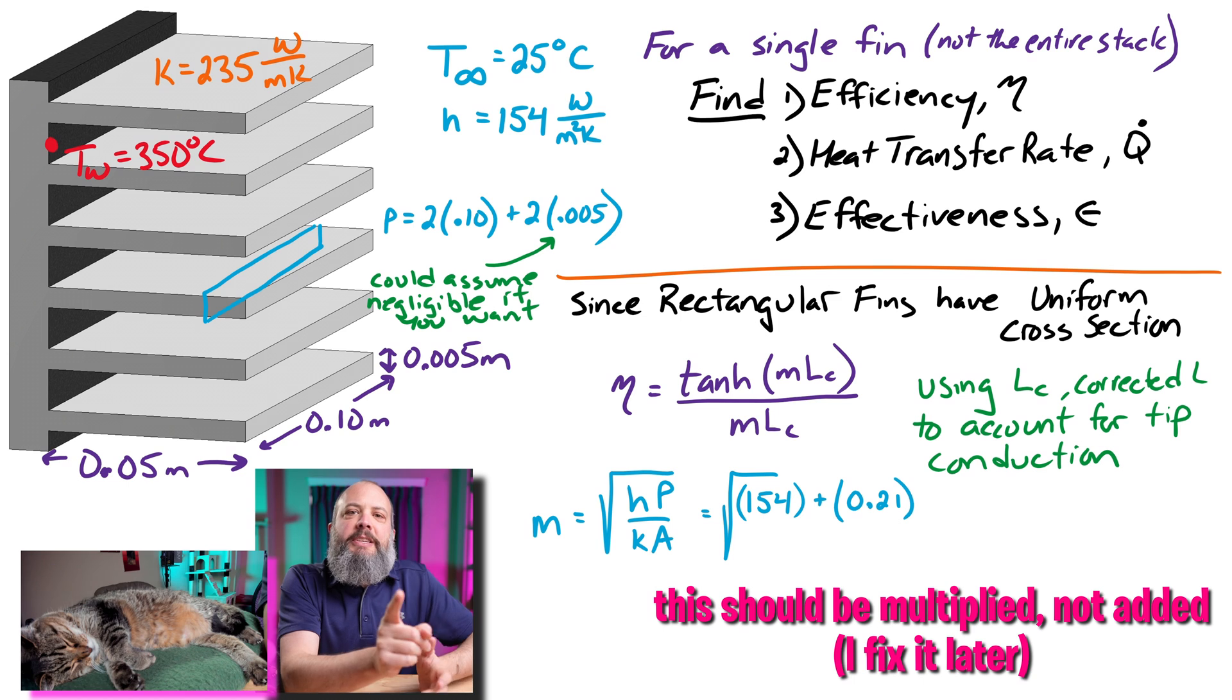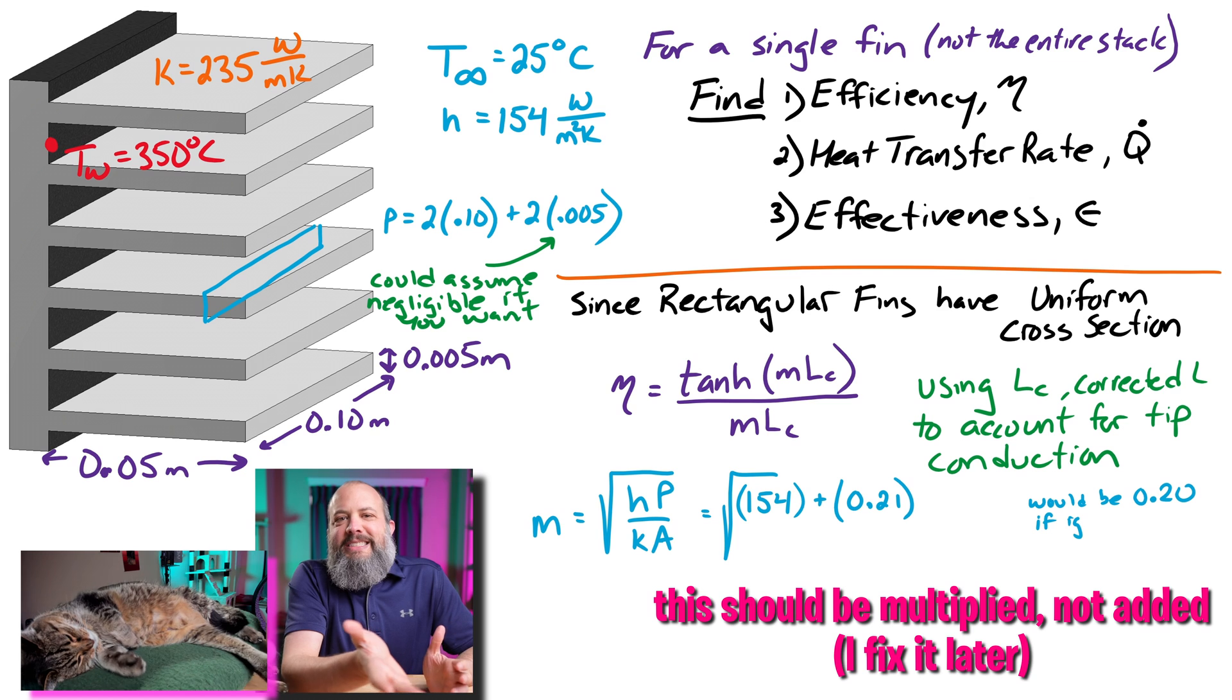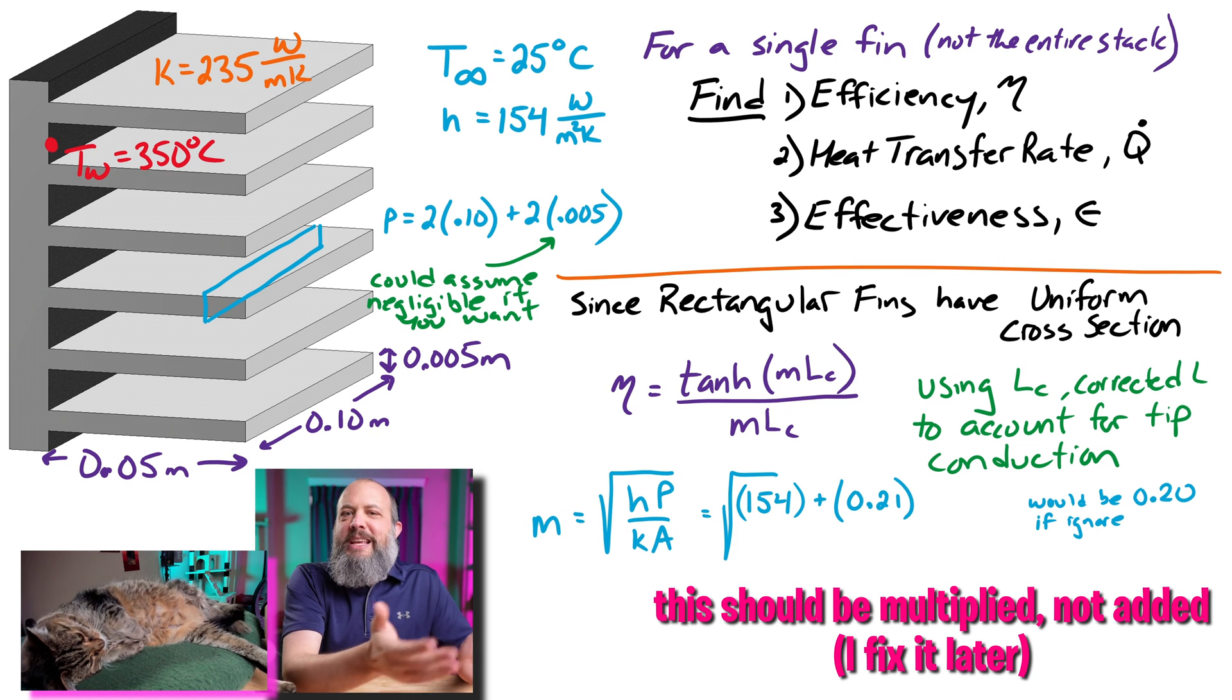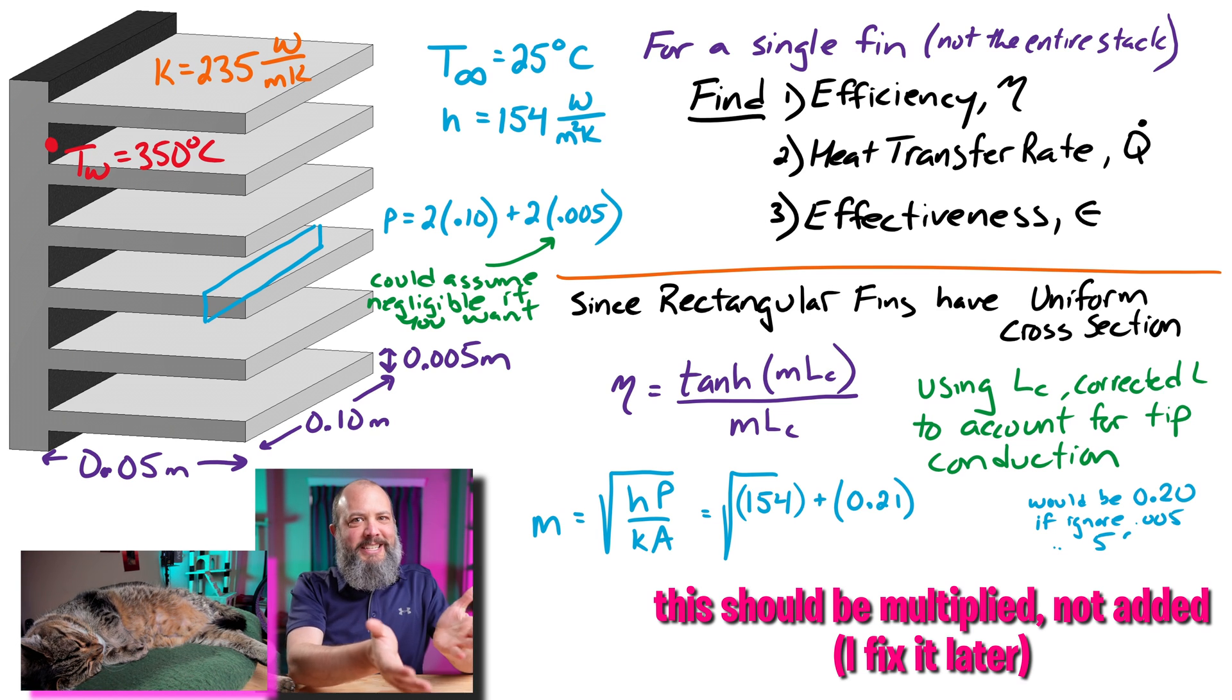Now probably every example problem you're going to see in your textbook is going to calculate perimeter a little bit differently than this. Most textbook examples are going to make an assumption that the thickness of the fin is negligible. And so they will calculate perimeter as just the top and bottom or just double the width of the fin. So they would call this 0.2. Now the thinner your fin, the better, the more accurate that assumption will be. But for this problem, I can see that if I made that assumption here, I would actually already be introducing about a 5% error into my problem. So I'm going to go ahead and include it. It's not that hard to add this extra distance. I'm all about assumptions that make the problem easier. But in this case, this assumption is just being lazy. It doesn't really make it that much easier.